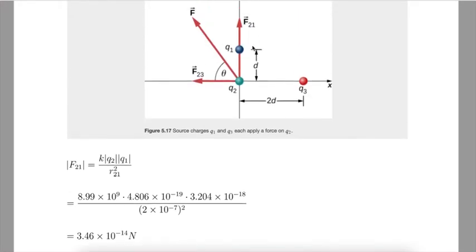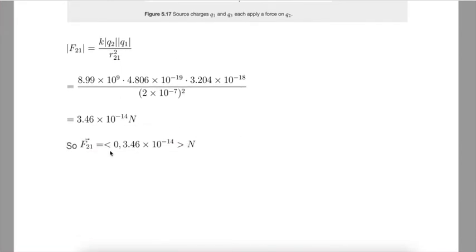Now we have to write that as a vector. So we look at our picture. We know from the picture that 2 is going to be pulled straight up in the y direction toward 1, because these are opposite charges and opposites attract. So this formula did not tell me that. It didn't tell me anything about direction. This only gives me magnitude. From the picture, I can see the direction. So as a vector, that will be the vector 0 in the x and all of it in the y direction. So there's F2 from 1 as a vector.